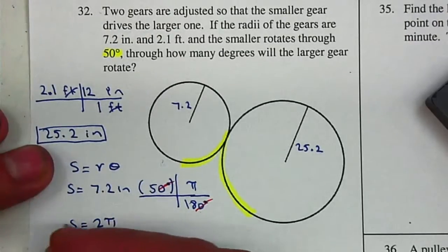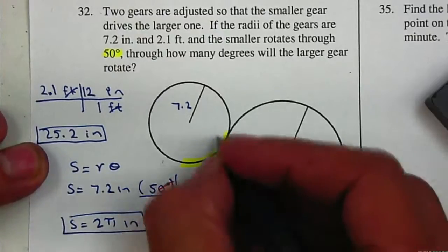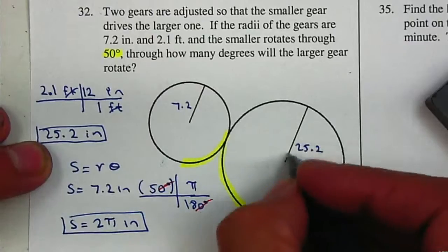So 2 pi inches. That is the arc length for the smaller one. Now I'm going to use the same information to find the angle here.